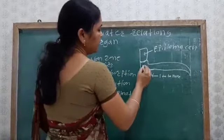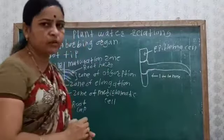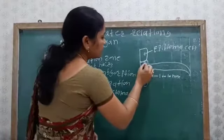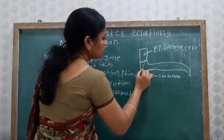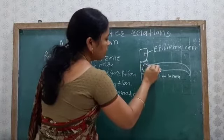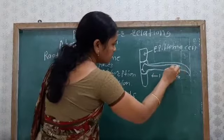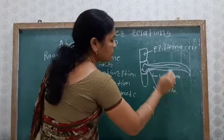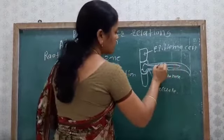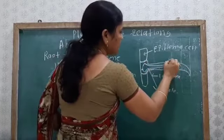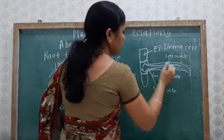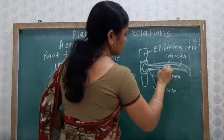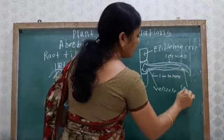One specific characteristic of the root hair is that it is unicellular — a single cell. It shows a single nucleus and a large vacuole. It is surrounded by cytoplasm, and the outermost wall is the cell wall, inside which there is also a cell membrane.